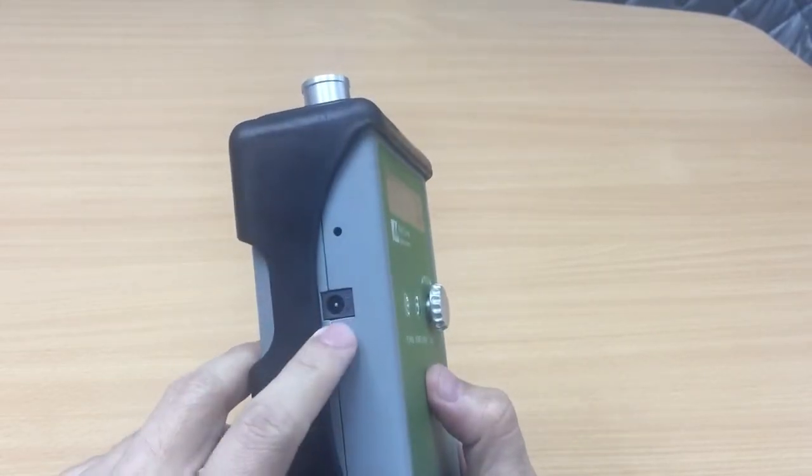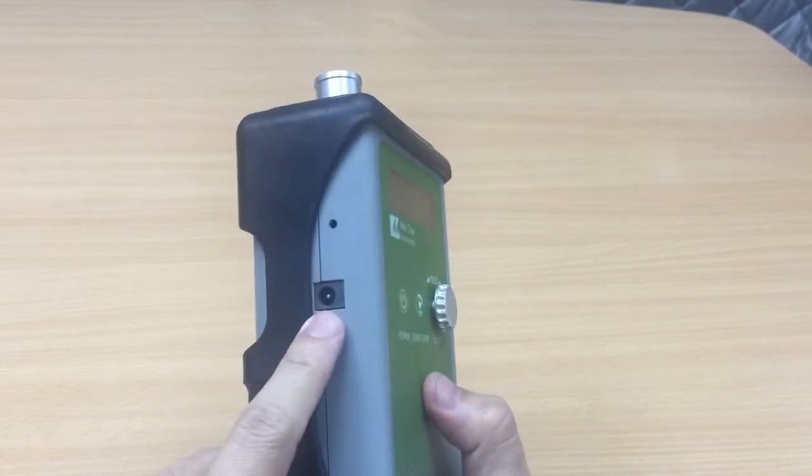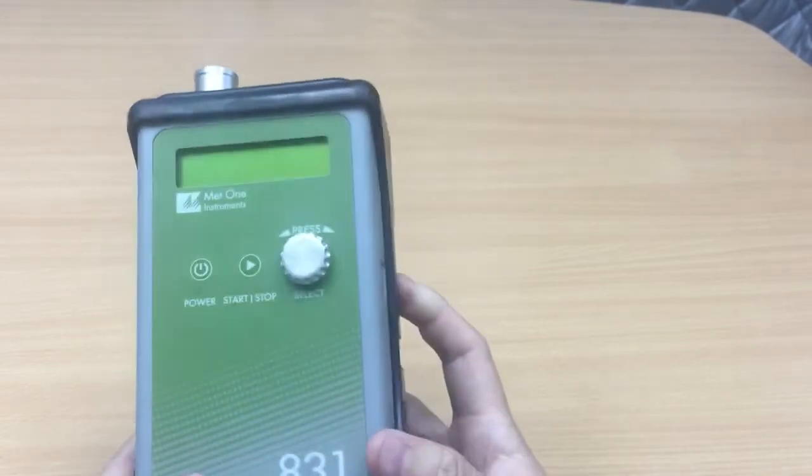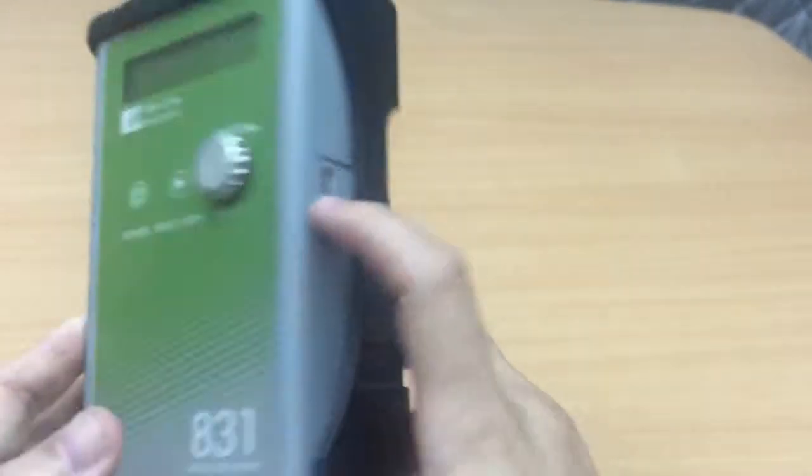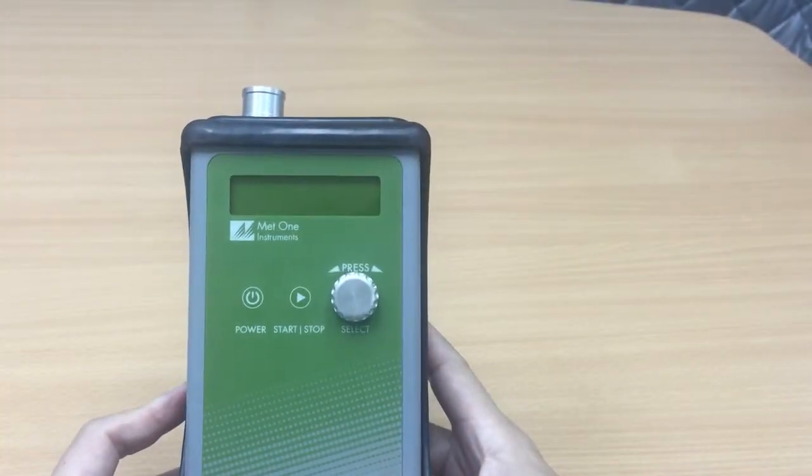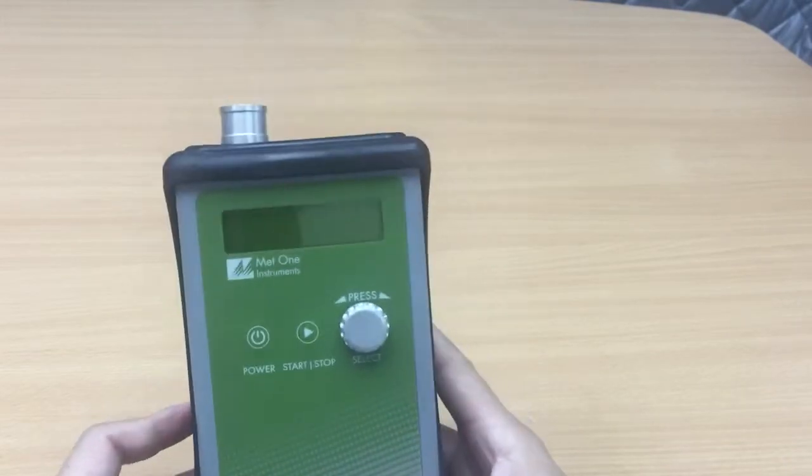So we have the DC jack, this socket over here for charging purposes and then we have a USB, a micro USB for downloading data. So the software when it comes with it we can download the instrument.